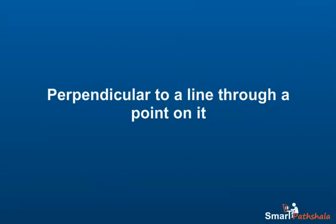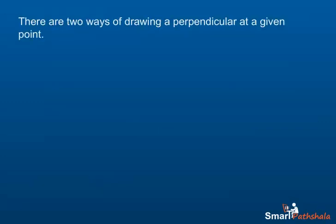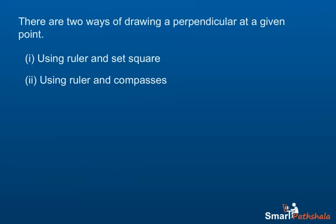Let us learn to draw a perpendicular to a line through a point on it. There are two ways of drawing a perpendicular at a given point: 1. Using ruler and set square, 2. Using ruler and compasses.